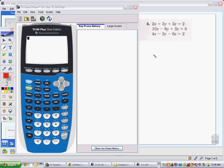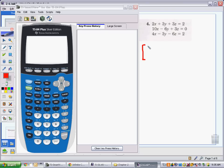the first thing I want to do is to rewrite this system as a matrix equation. So I'll do that. I'll write 2x plus 3y plus 3z, 10x minus 6y plus 3z, and 4x minus 3y minus 6z is equal to the matrix 2, 0, 2.